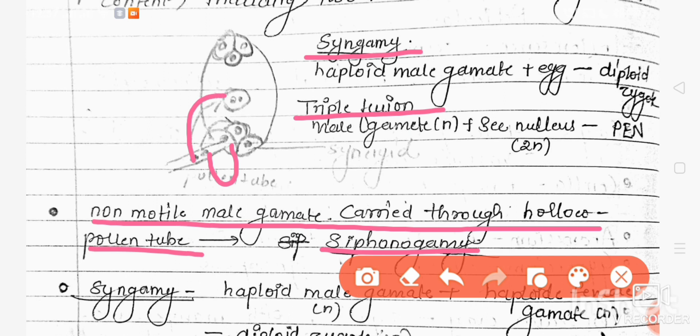One male gamete fuses with the egg, and one male gamete fuses with the secondary nucleus. In syngamy, the haploid male gamete fuses with the haploid egg to form the diploid zygote. In triple fusion, the haploid male gamete fuses with the diploid secondary nucleus to form the triploid primary endosperm nucleus, or PEN.